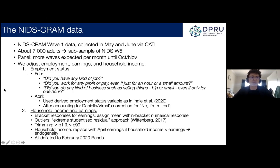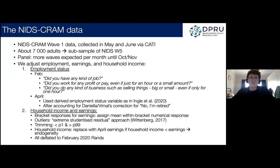Let me describe the dataset. The NIDS-CRAM was part of a collaborative research project across five South African universities — UCT, Stellenbosch, VITS, Rhodes, and UWC — with about 30 social science researchers involved. The primary aim was to provide rapid and reliable research during the national lockdown period in South Africa. A big motivation was the lag and postponement of existing surveys, since many rely on face-to-face interviews which couldn't be done given the regulations.